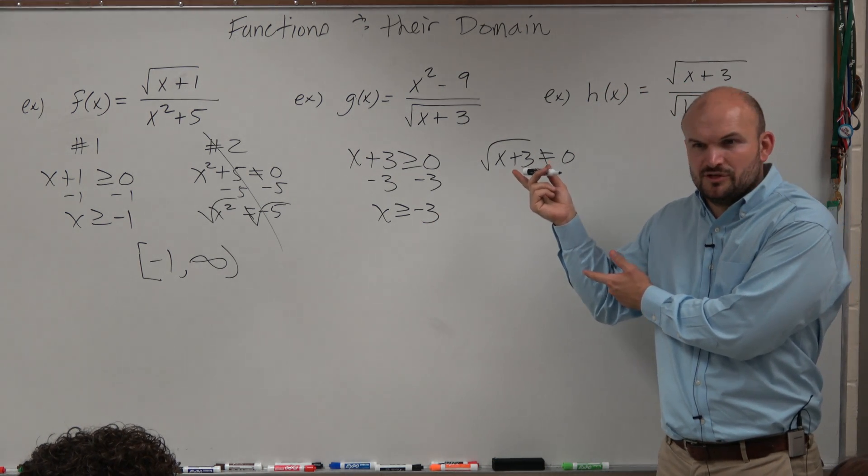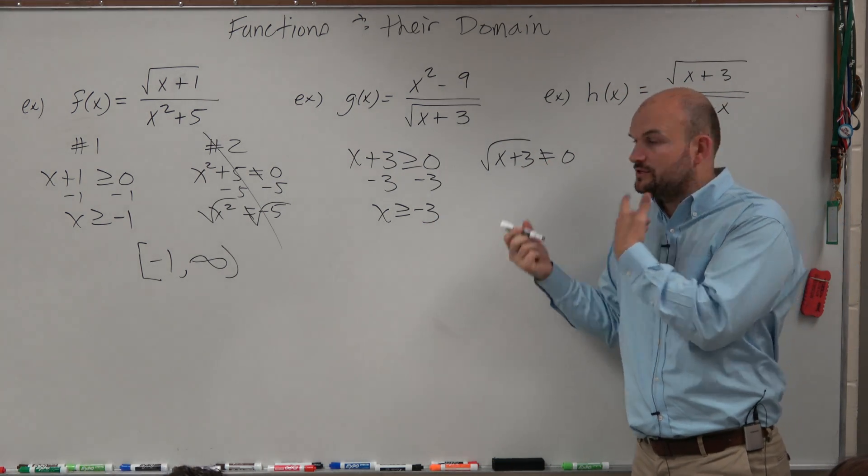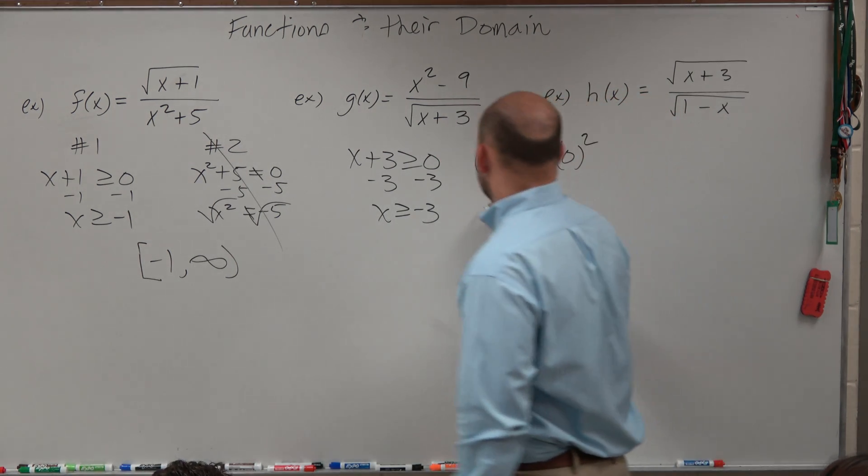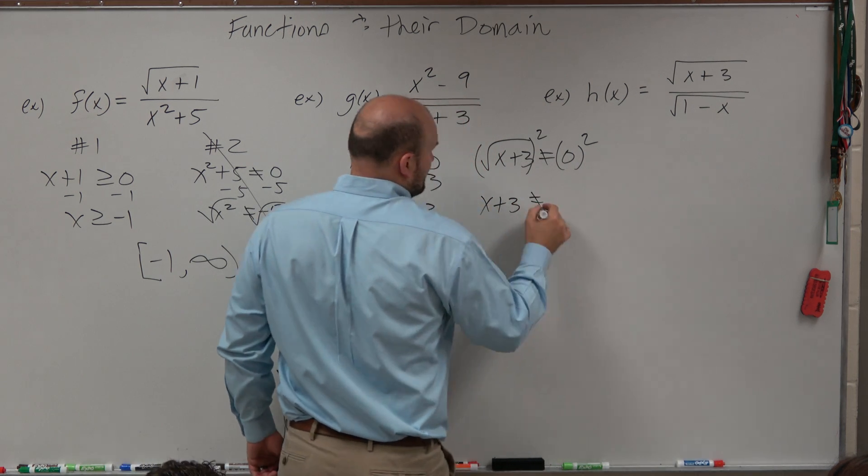So to undo squaring, you have to, I'm sorry, to undo the square root, you have to square both sides. All right.